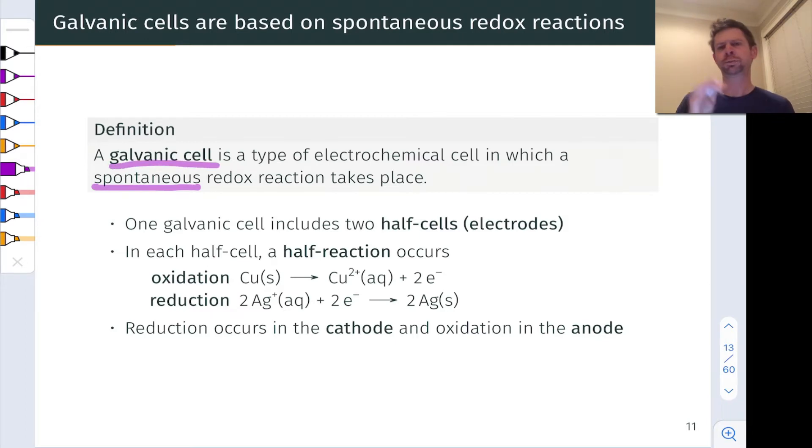We'll look at a specific design for a galvanic cell in a second, but the high-level idea here is that we're converting chemical energy into electrical energy. Every galvanic cell includes two what are called half cells, and you'll sometimes hear these referred to as electrodes as well. In each half cell, a half reaction occurs. A half reaction is a pure oxidation or reduction event.